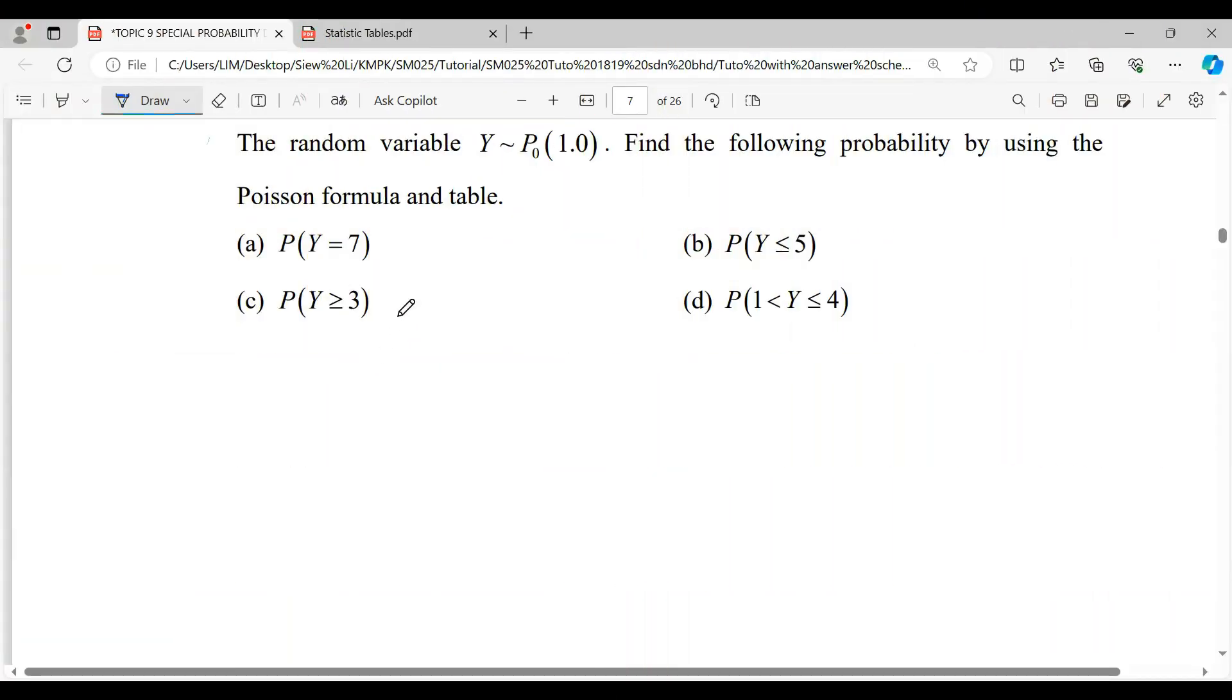Hi everyone, for this question we have the random variable Y distributed as Poisson with lambda equals 1.0. We need to find the following probabilities by using the Poisson formula or table.